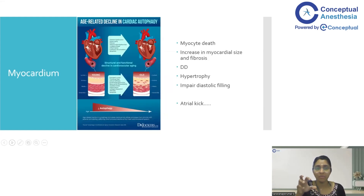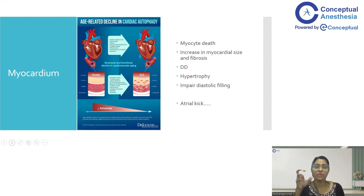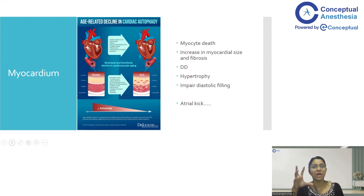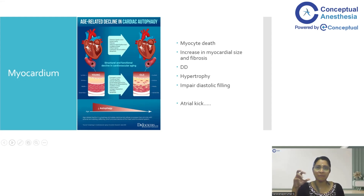The changes in myocardium include myocyte death, so myocytes can be reduced in number in the heart. There is an increase in size of myocardium and fibrosis as age advances. The systolic function of the heart is preserved till later stages of life if there is no coronary artery disease. However, diastolic function is more commonly affected — diastolic dysfunction is more common in elderly patients. The relaxation property of the heart is lost or decreased. Concomitant hypertension leads to concentric left ventricular hypertrophy, and diastolic dysfunction can lead to impaired diastolic filling.